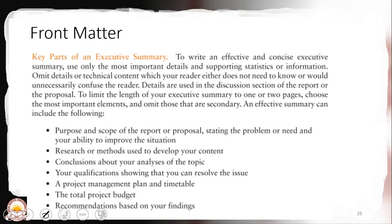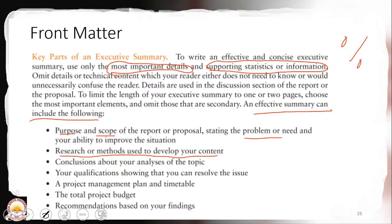Key parts of an executive summary: to write an effective and concise summary, it's very important that you highlight important details and statistical information should be finely tuned and mentioned in terms of percentages or overall calculations. An effective summary can include the following: purpose and scope of the report, stating the problem or need and your ability to improve the situation, the research or methods you use in developing contents, conclusions about your analysis, how the problem can be resolved, overall project management plan and timetable, total project budget, and recommendations based on findings.